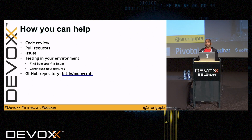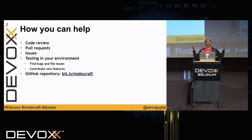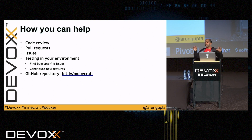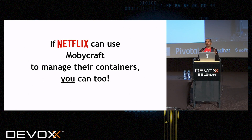You can help by doing code reviews — he just became a high schooler. Try it out, file issues if it doesn't work, send pull requests, and test it in your environment to see how you can use MobiCraft to manage your Docker containers. The GitHub repository is of course open source. And here's a message from my son: if Netflix can use MobiCraft to manage their containers, you can too. Thank you.